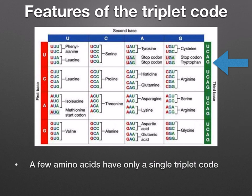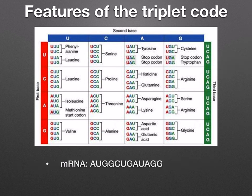Let's have a look at the features of the triplet code. A few amino acids have only a single triplet code. For example, tryptophan is only coded by UGG. Here you've got a table of the triplet codes that code for amino acids.